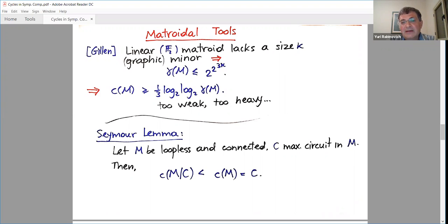Let M be loopless and connected. What is connected, I will say in a second. Loopless means that there are no self-loops, there are no edges of rank zero. And let C be a maximal circuit in it. So if we contract M with respect to C, then the size of the maximal circuit goes down. So this is the main tool we are going to apply. Of course we have further developments, but this is the core of the argument. Igor? I hear you. Okay. Any questions so far? You hear me? Yes, I hear you. This is good.